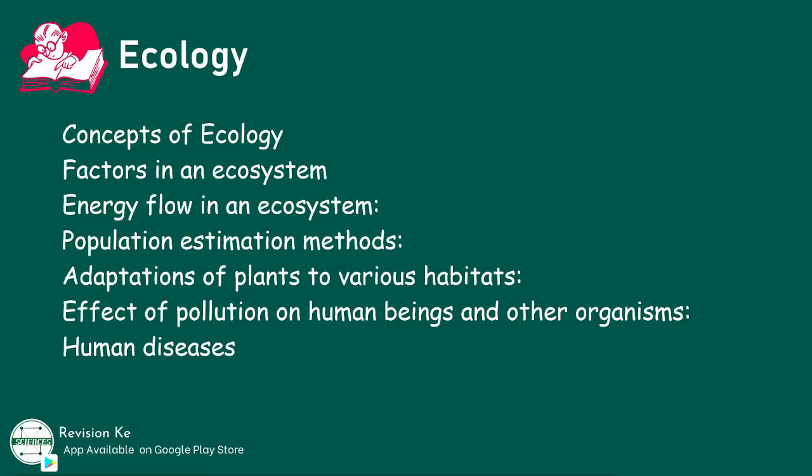Additional objectives are: explaining the use of various methods of estimating population, relating adaptations of plants to various habitats, describing the effects of pollutants in air, water, and soil on humans and other living organisms, and finally identifying symptoms of different types of human diseases, methods of transmission, and their control.